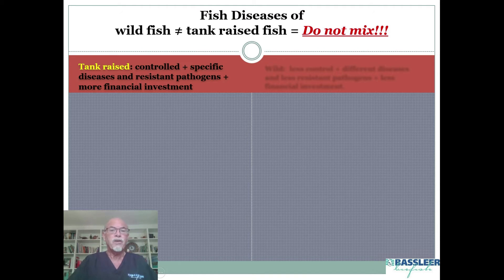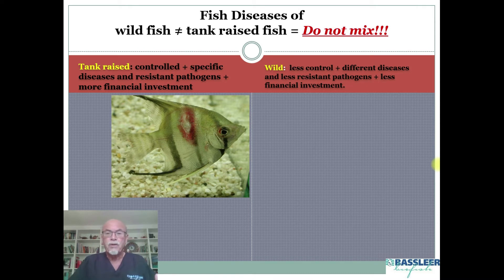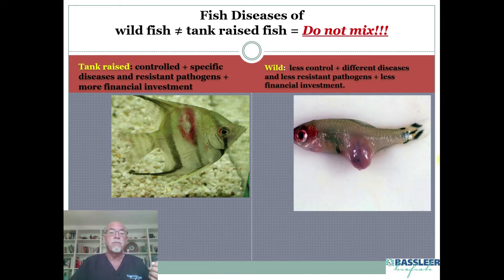For wild fish and tank-raised fish, we recommend not to mix them when you receive them, but to first do the quarantine procedure. Why? Because tank-raised fish come from a controlled environment with specific diseases and specific resistance. Wild fish have less control and many different kinds of diseases, but the pathogens are less resistant and more easy to treat — except for this one: a nematode infection on this rummy nose, for which no medicine can help anymore.